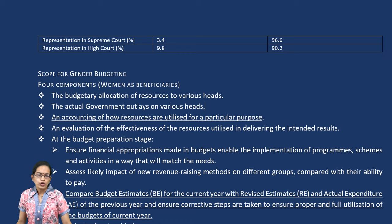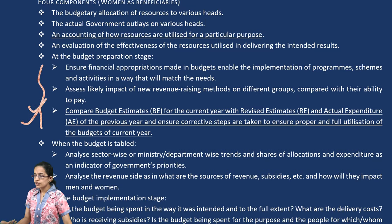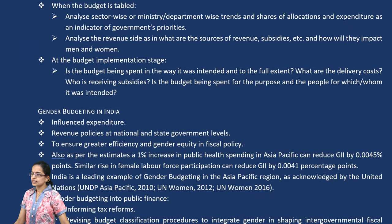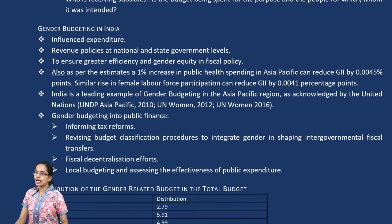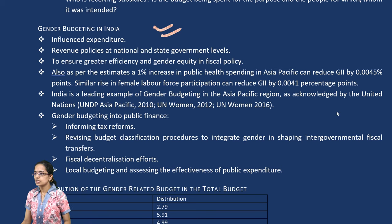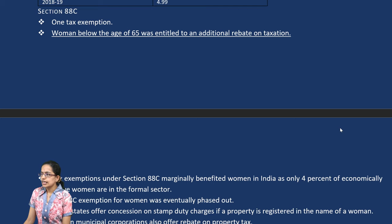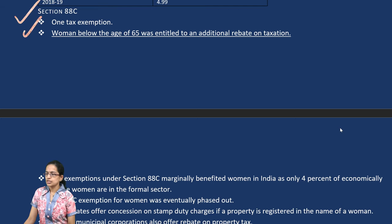The four components of gender budgeting focus on the preparation stage — financial appropriations, revenue-raising methods, comparing budget estimates, and analyzing how the budget has influenced the major proportion of the population. This includes reforming tax, revisiting budget classification, bringing in decentralization of fiscal support systems, and local budgeting. Under Section 88C, a tax exemption has been given to women.